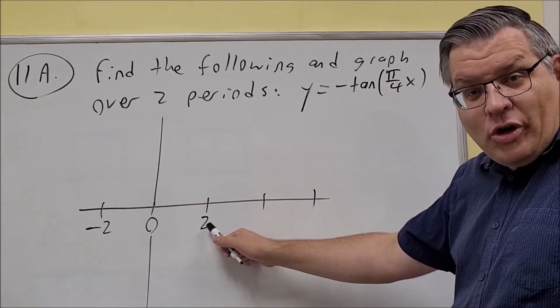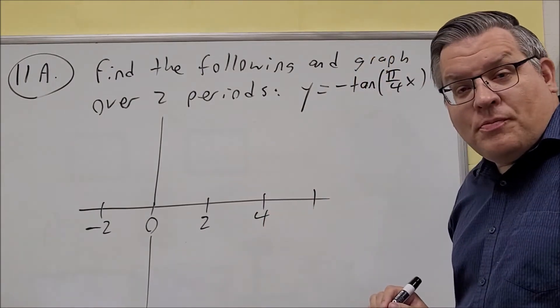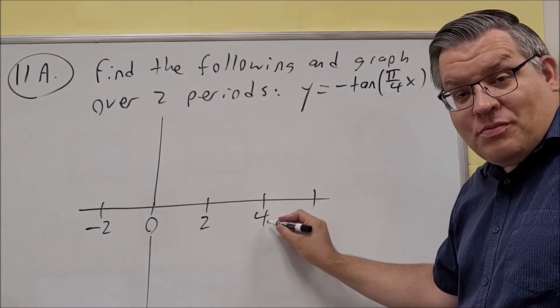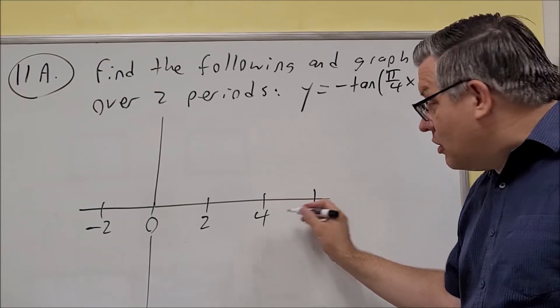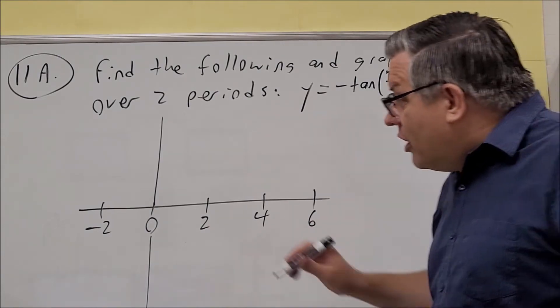2 plus the half point again, 2 plus 2 gives you 4, that's the next key point. And then 4 plus 2 gives you 6. So that's all of your key points.